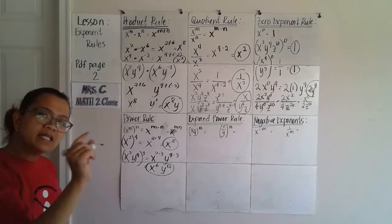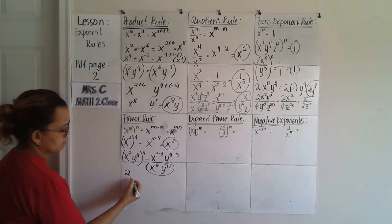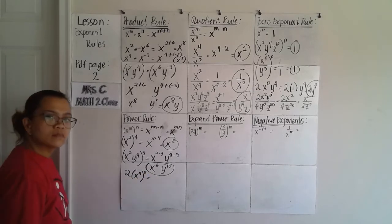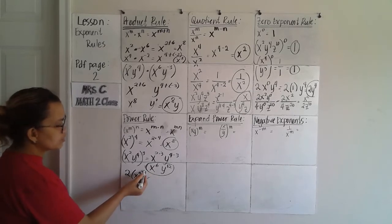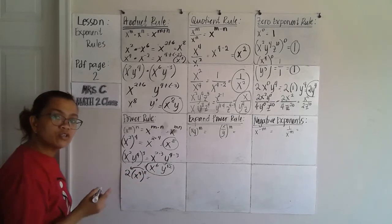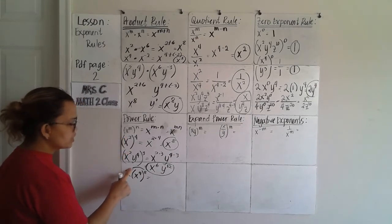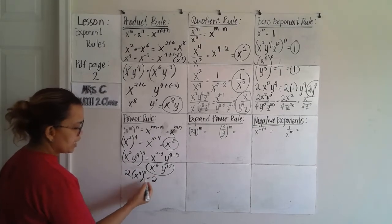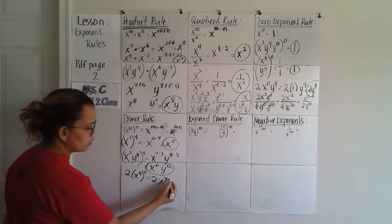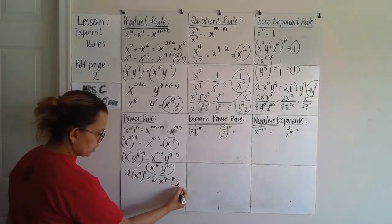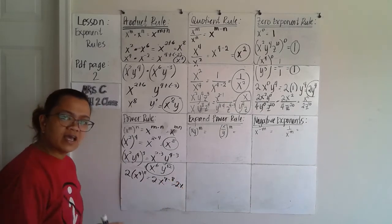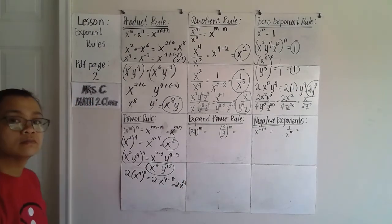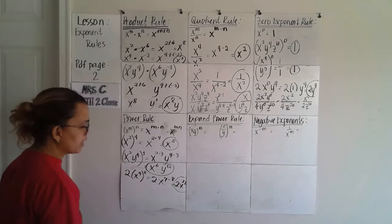Let's make it a little more complicated: 2 times x to the 4th, raised to the 8th power. Do I multiply 8 by the 2? No, because 2 is not raised to the 8th power — just copy the 2. Only x to the 4th gets multiplied by 8, giving 2x raised to 32.